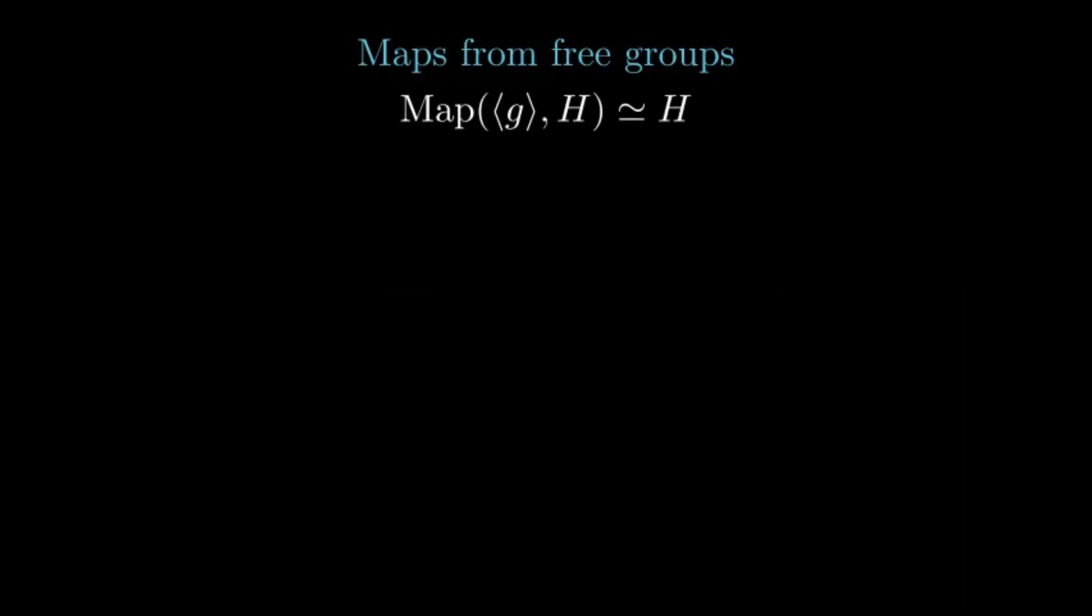Suppose we have a free group with one generator g. Note that the set of maps from it into any group H is nothing but H itself. The image of the generator determines the rest of the map. This is the defining property of a free group.